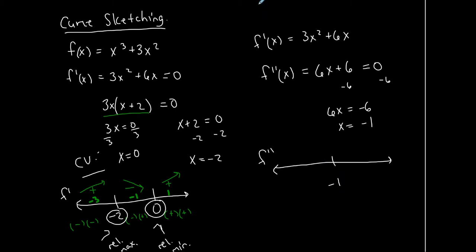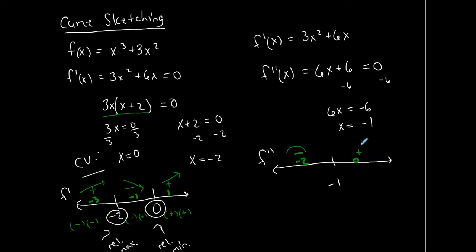I call x = −1 a potential point of inflection, and I stick it on an f″ number line to determine concavity. I'll pick −2 to the left of −1 and 0 to the right, and plug them into the second derivative. Plugging −2 in: −12 + 6 gives an overall negative result. When the second derivative is negative, the function is concave down. Plugging 0 in: 0 + 6 gives a positive outcome, and when the second derivative is positive, the function is concave up.